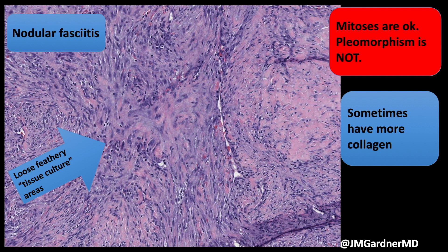Some cases are much more pink and have denser sclerotic collagen. When lesions are earlier and just starting out, they're much more cellular; then they get cystic breakdown, and over time some get sclerosis and essentially scar down. You can still see some of that loose feathery tissue culture area in these later examples.